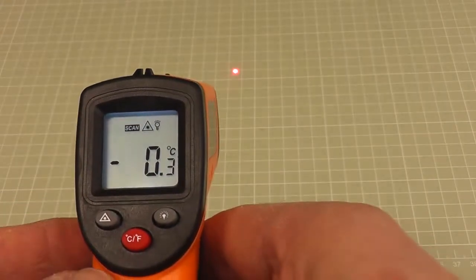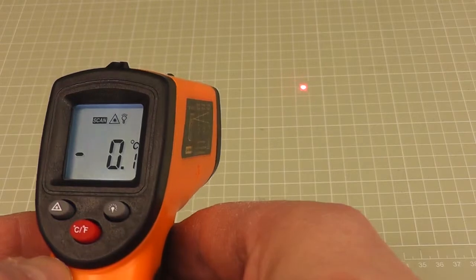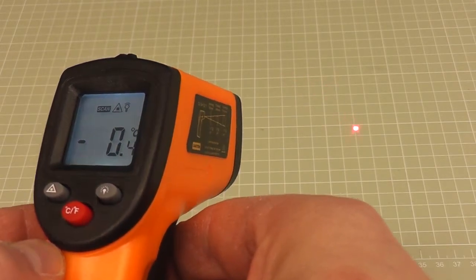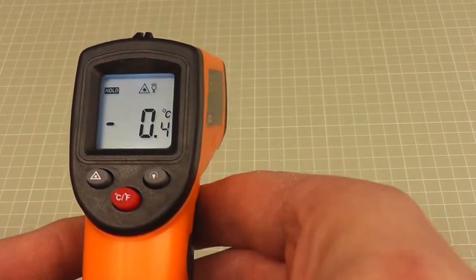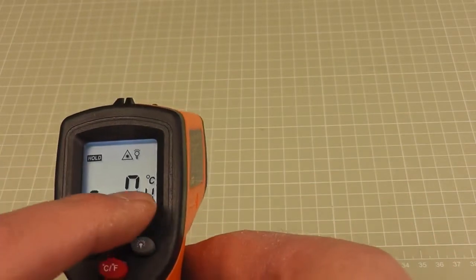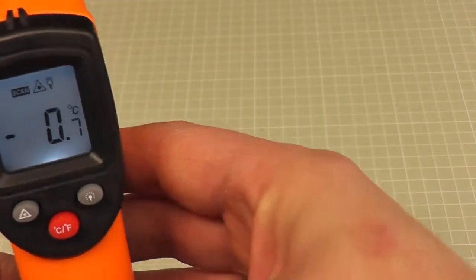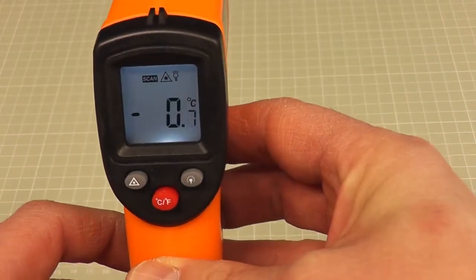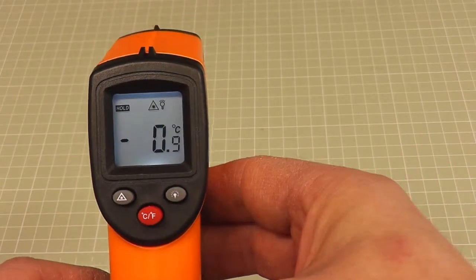So if we turn the laser on, you can just see there that it gives you an opportunity to know exactly what point you're taking the temperature reading from. When you release the trigger, it holds the temperature for you. So as you move the thing around and it takes different temperature readings, as soon as you take your finger off the trigger, it locks it to that point, which is really useful.